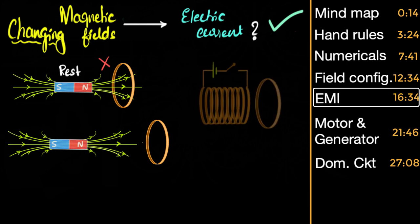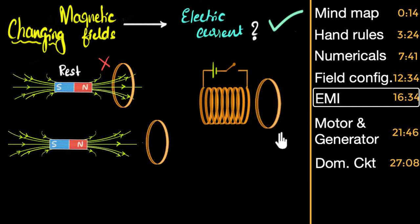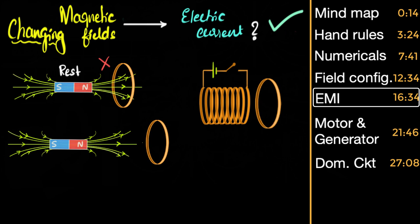Another experiment — the coil and coil experiment. I have one coil not connected to any battery, and another coil or solenoid connected to a battery. I close the switch. What's going to happen? When I close the switch, momentarily there'll be a current, and then the current disappears. That's what you'll find — only momentarily there'll be a current, then it disappears.